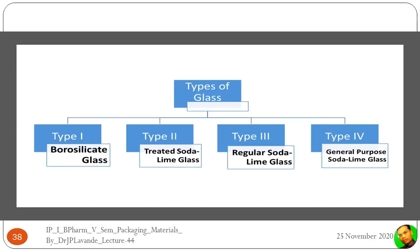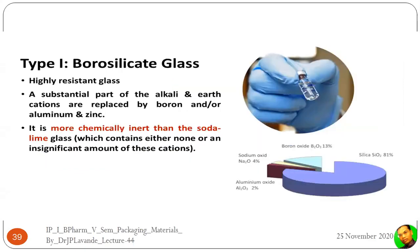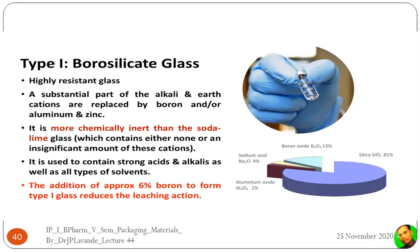Type 1 borosilicate glass is composed of silica (~81%), boron oxide (13%), sodium oxide (4%), and aluminum oxide (2%). A substantial part of alkali and earth cations are replaced by boron and aluminum, making it the most chemically resistant glass. It is more chemically inert than soda lime glass, does not contain alkali cations, and can contain strong acids, alkalis, and all types of solvents. Addition of approximately 6% boron in forming Type 1 glass reduces the leaching action.